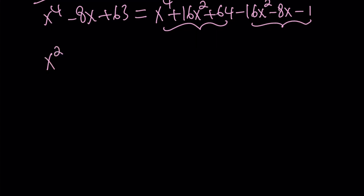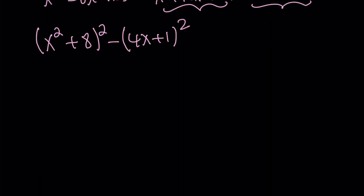Let's go ahead and write the result. The first one becomes x squared plus 8 quantity squared. And the second one just becomes 4x plus 1 quantity squared. And this is difference of two squares. Isn't that awesome?